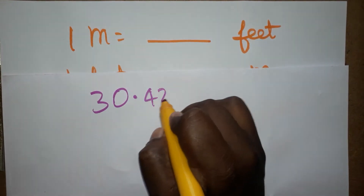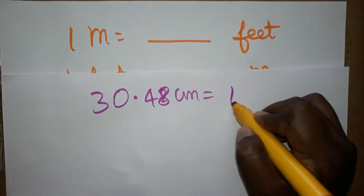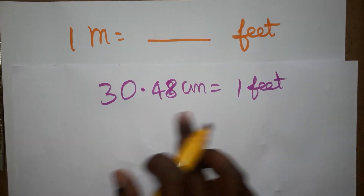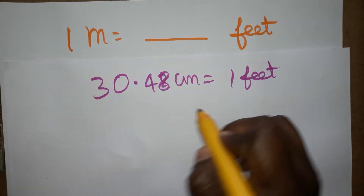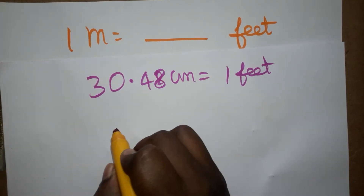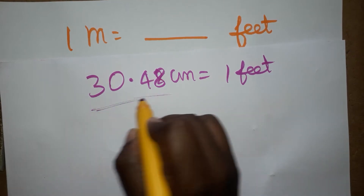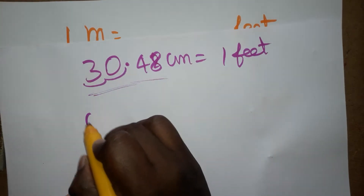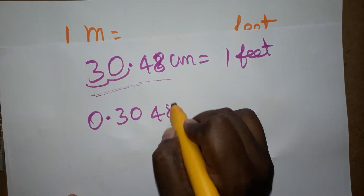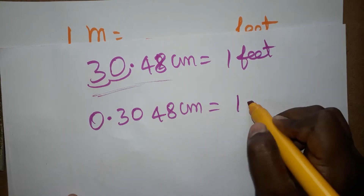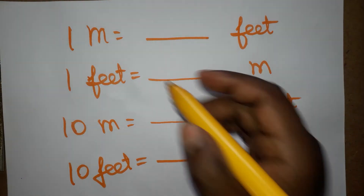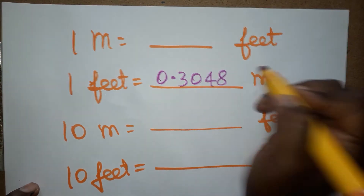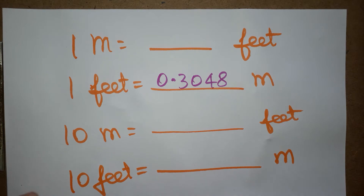First, we learn approximately: 30 centimeters is 1 foot. The accurate value is 30.48 centimeters is equal to 1 foot. Now, to convert centimeters to meters, we divide by 100. When we divide by 100, the decimal moves two places, so 0.3048 meters is equal to 1 foot.